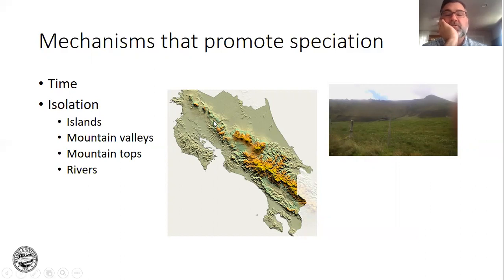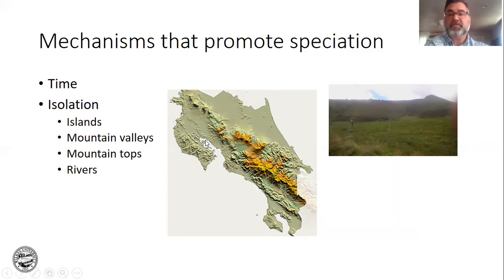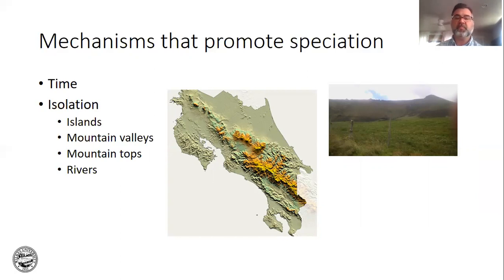When this area was warmer, the habitat was the same between these mountain tops, but now that it's cooled off, these mountain tops are now separate. So you can get species that occur on these mountain tops that occur nowhere else. Rivers are another barrier — when rivers form because of geology, if you have animals that can't cross rivers, you'll get speciation occurring on either side, and those organisms that occur on both sides will become different species.